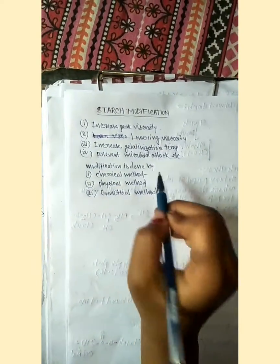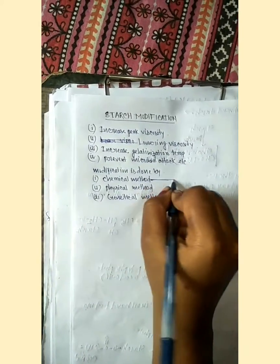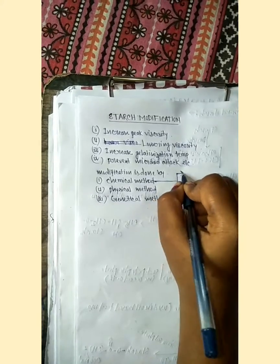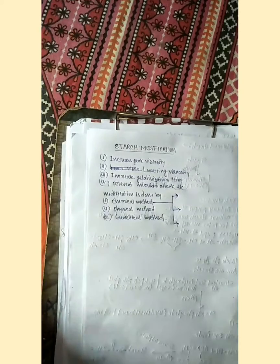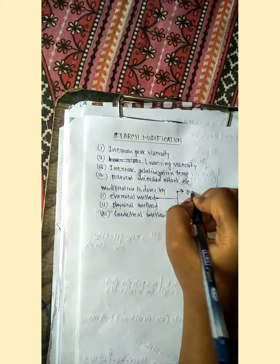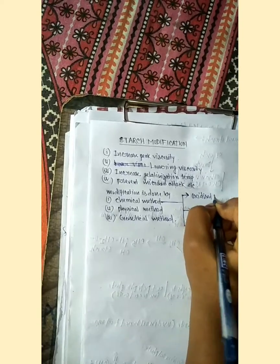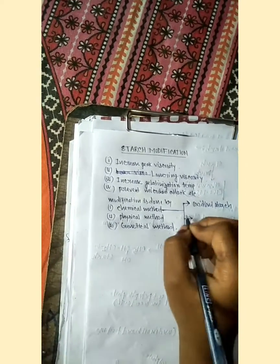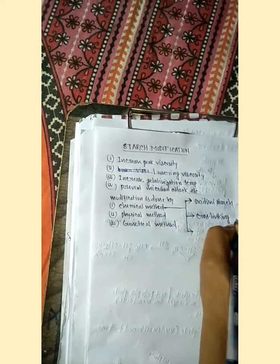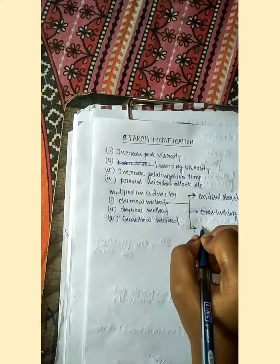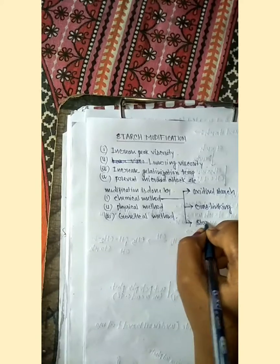Today I'll discuss the chemical method. Under the chemical method, there are three types: oxidized starch, cross-linking, and starch esters.